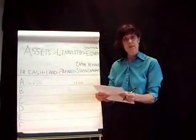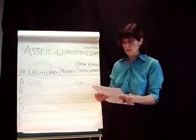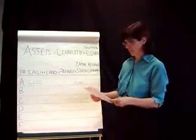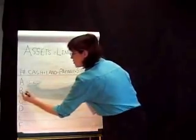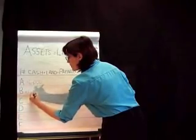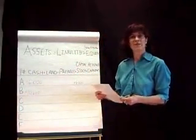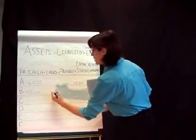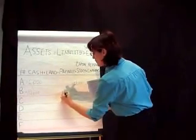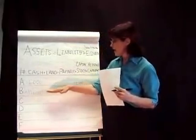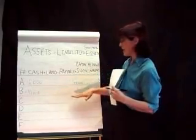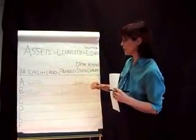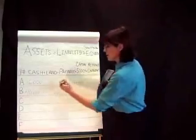The next transaction: the business borrows $10,000 from First National Bank to finance its operations. They're borrowing money, so cash is coming in for $10,000. When we borrow money from the bank, we owe them — so that's a liability. Liabilities increase by $10,000. We've increased the asset cash and increased our liabilities, and with the equal sign you can see those balance.